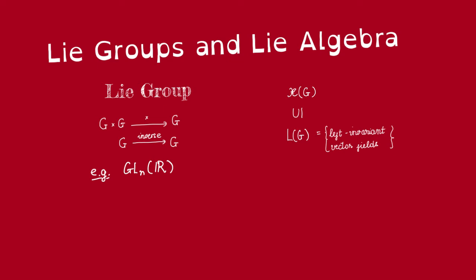For a Lie group we have an additional Lie algebra. For a usual manifold we have the Lie algebra of smooth vector fields, but for a Lie group we have the Lie algebra consisting of left invariant vector fields.